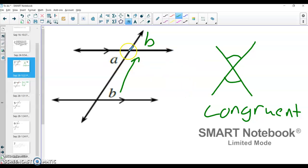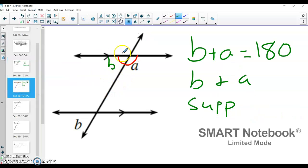So that's the difference here. Congruent, the angles are exactly the same, and we see that here with vertical angles. Here, B and A create a straight line, or they create 180 degrees, and so we say that's supplementary.